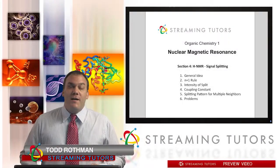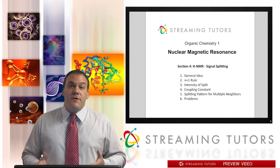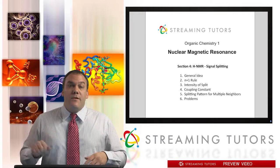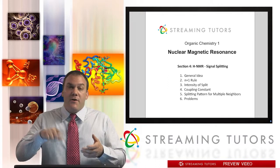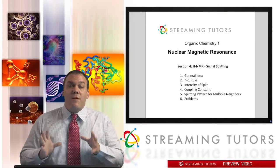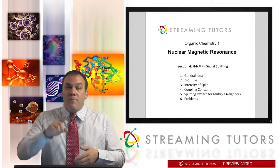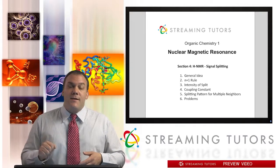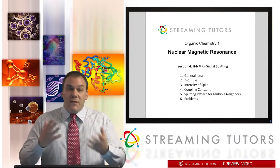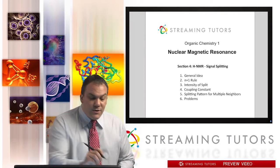Welcome back to organic chemistry. In this video we're going to learn about the multiplicity of a signal in an NMR chart — another way to say that is signal splitting. Sometimes the signals you read on a chart are not just a straight line up and down but are actually broken up into several sub-lines. It's one signal but it's broken up into several spikes. We'll learn why that happens, how it happens, and the different patterns related to it.